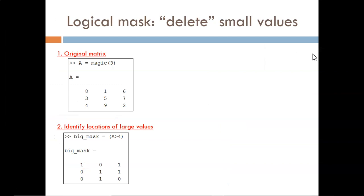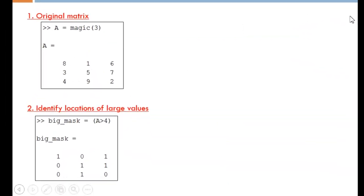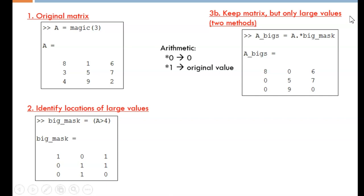Another way we can use the mask is shown here. Rather than ignoring the smaller values, I will convert them to zeros and maintain the original size of matrix A. The first method to accomplish this is arithmetic. Multiply the original matrix and the mask. Don't forget the dot. All the small numbers are multiplied by zero and so appear as a zero in the output matrix. All the larger numbers are multiplied by 1 and so stay the same.